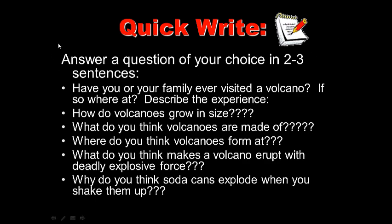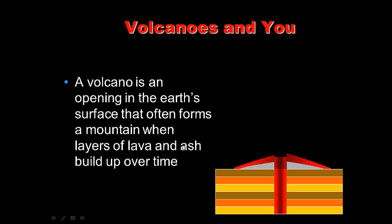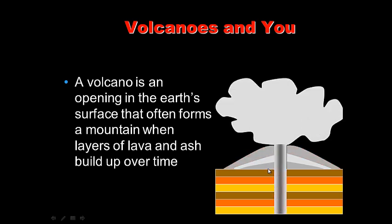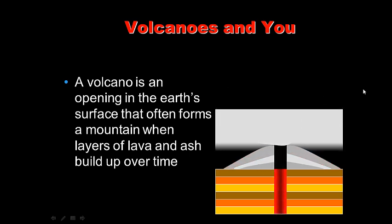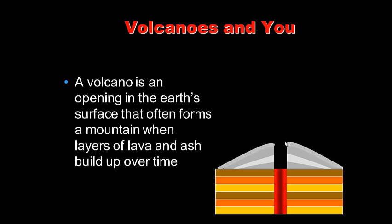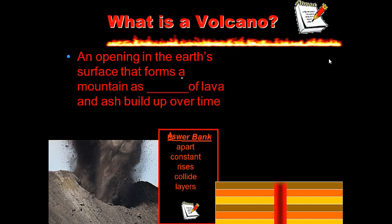A volcano is an opening in the Earth's surface that often forms a mountain when layers of lava and ash build up over time. Lava cools to rock, forming a new layer, and sometimes ash falls down and adds additional layers.